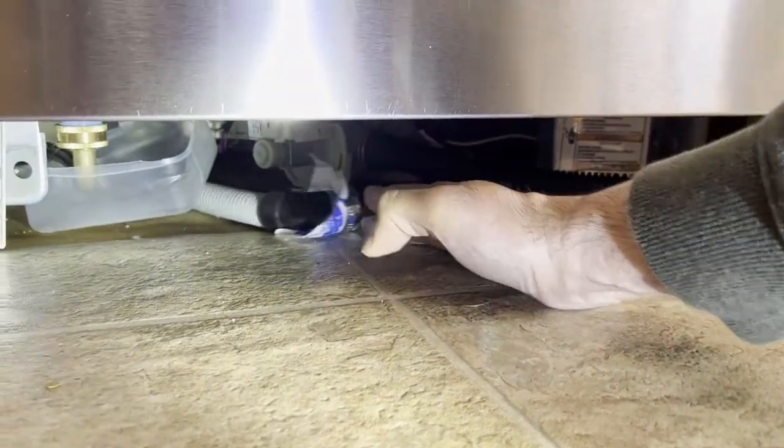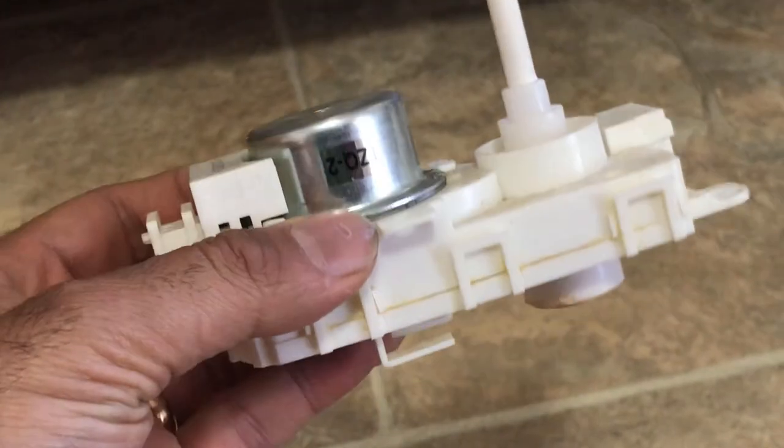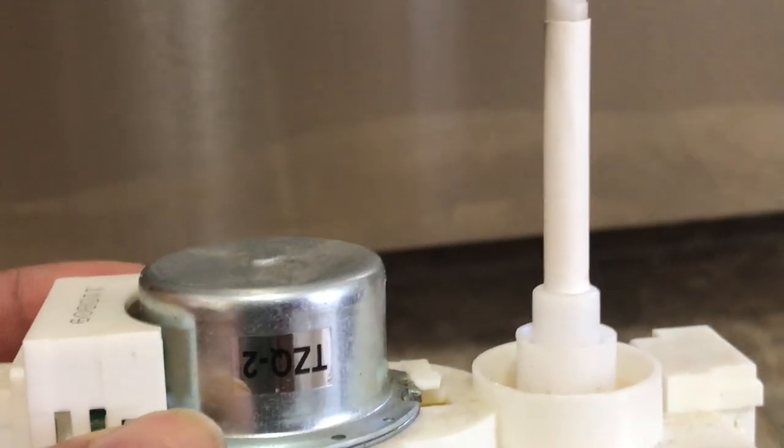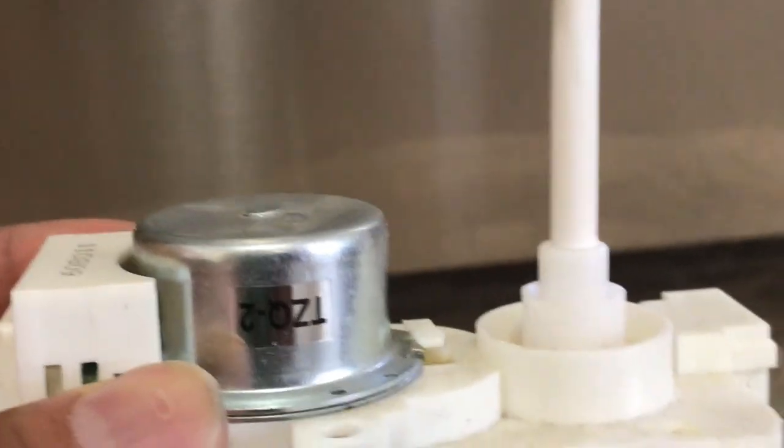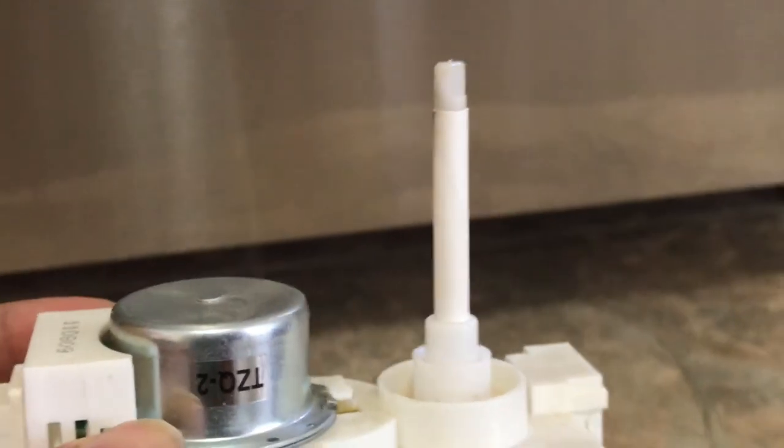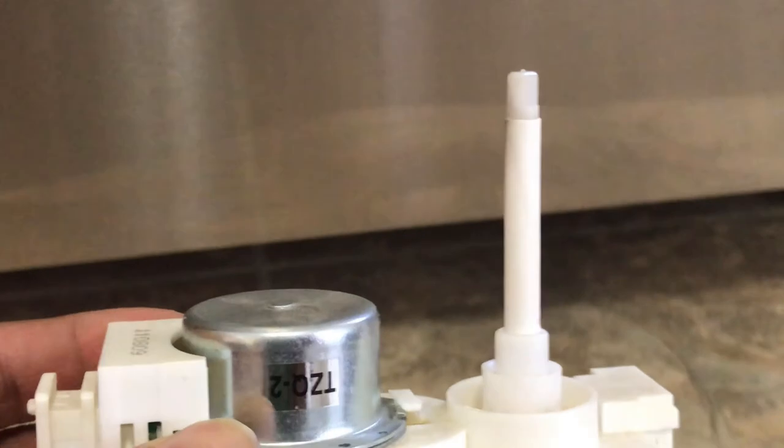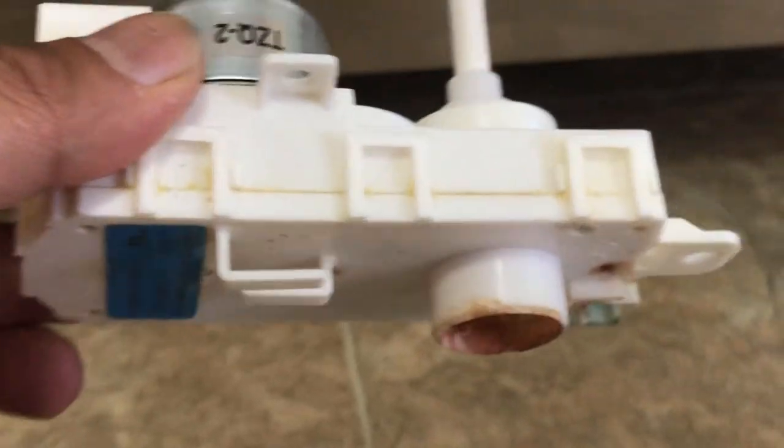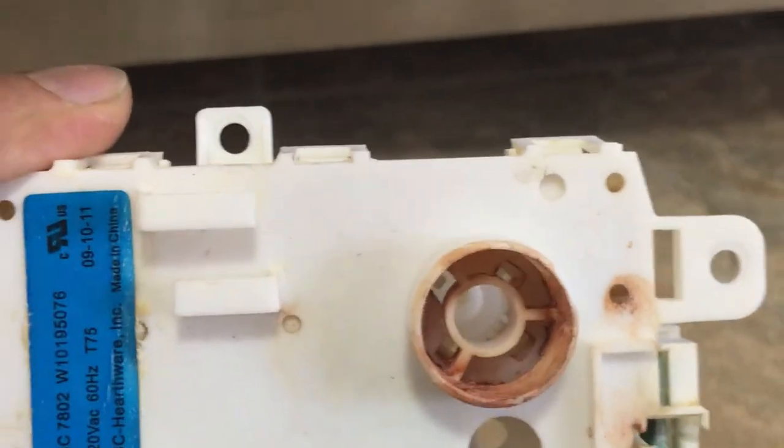This is how the diverter motor looks like. This helps divert water to the upper and lower spray arms in the dishwasher. This goes underneath the dishwasher and the shaft sticks out and can be seen from inside the dishwasher. There's a grommet that goes on it which becomes loose.